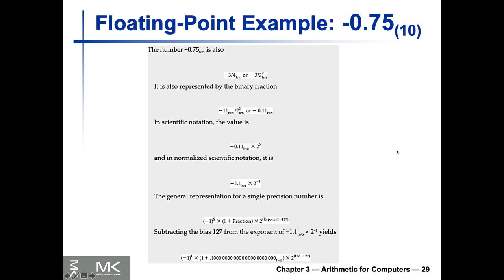Now let's see an example of how we're going to convert numbers back and forth from decimal to binary floating point. We are interested in converting minus 0.75 in base 10 to binary. First, what we need to do is represent this in fraction form. You can see that this value is actually minus 3 over 4 in base 10. Even if you were asked such questions on an exam, I make sure they're easy enough to compute — you don't need a calculator.